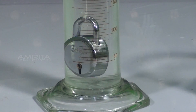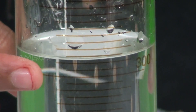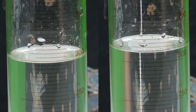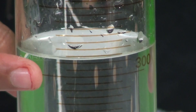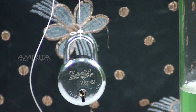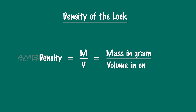The lock displaces water and the water level rises. Note the current position of the water level. Find the difference between the final and initial levels of water, which will give the volume of the lock immersed. Now we can determine the density of the lock using the formula: density equals m divided by v, which is equal to mass in grams divided by volume in centimeters cubed.